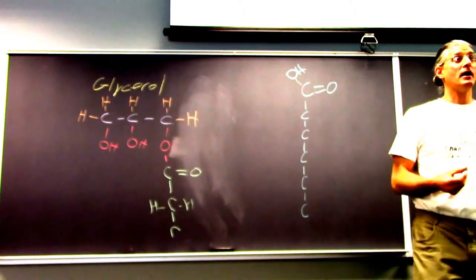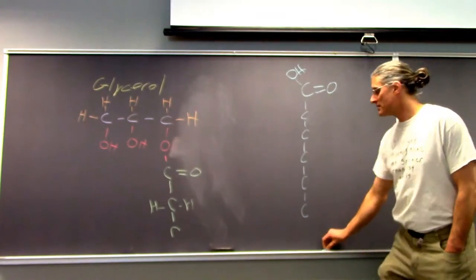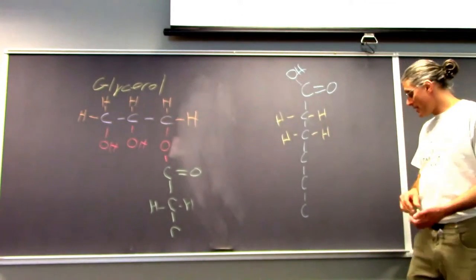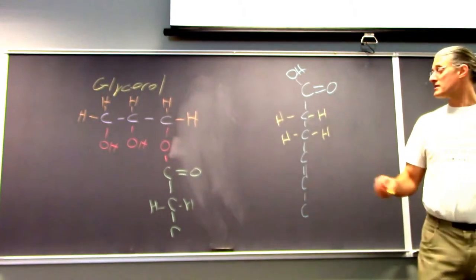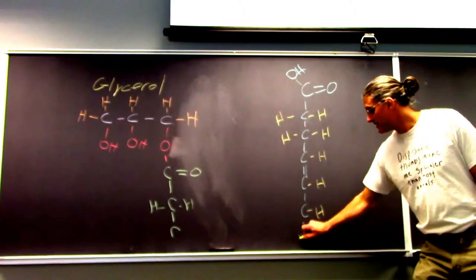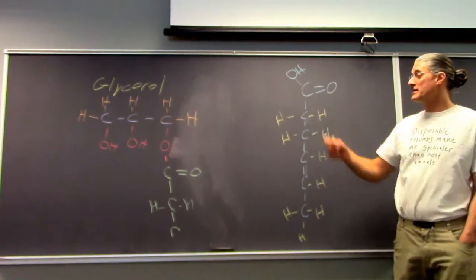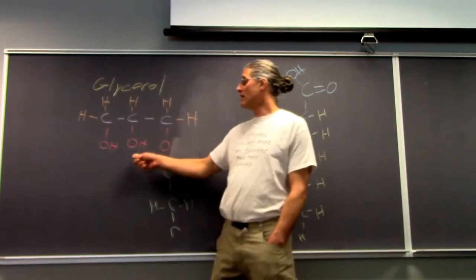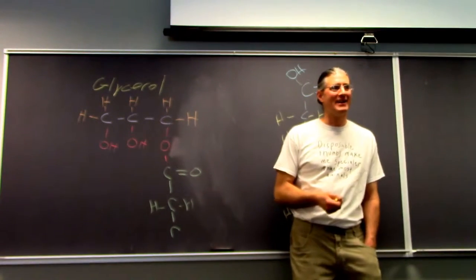Each of the carbons has to have four bonds around it. The bonds are going to either be with other carbons or with hydrogens. Some carbons will have double bonds between them — that's an unsaturation point — in which case there's only going to be one hydrogen, not two. When three fatty acids are linked to glycerol, it's called a triacylglycerol, or a triglyceride, or a fat.